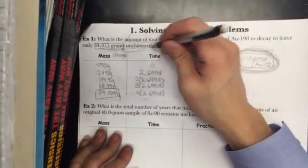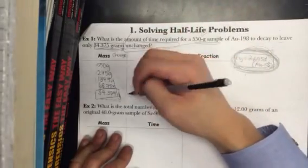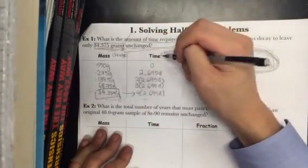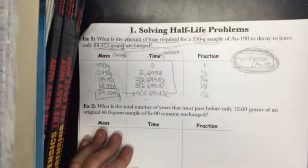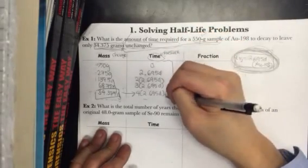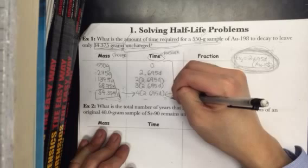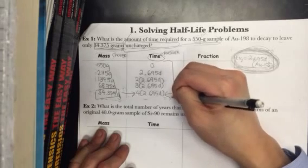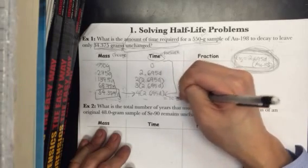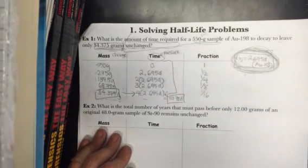So now what I can do is I can find the amount of time required for the mass by looking at the same row. The time in the answer column required for me to get down to this 34.375 grams is 4 times 2.695 days. If you do that and do the math, you'll see that the time required for this is 10.78 days. So that's it.